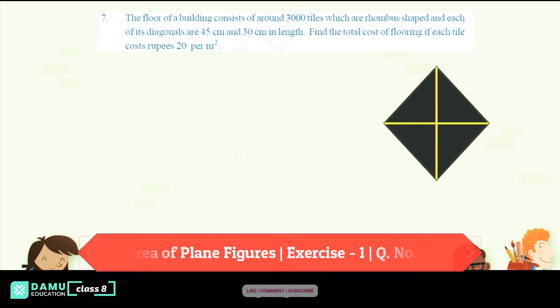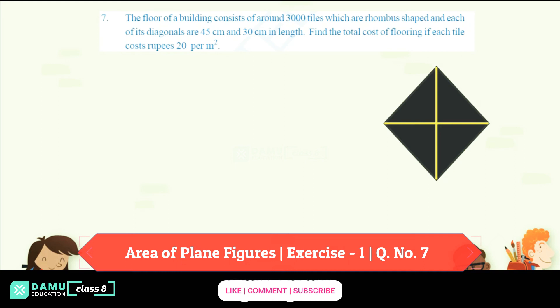Hello viewers, thanks for watching our videos. If not yet subscribed, please subscribe and click the bell icon. In this module we're going to discuss: the floor of a building consists of around 3000 tiles which are rhombus-shaped, and each of its diagonals are 45 and 30 centimeters in length. Then find the total cost of the floor if each tile costs rupees 20 per square meter.